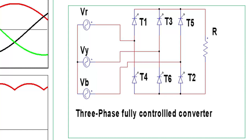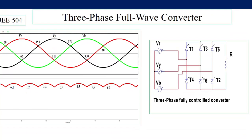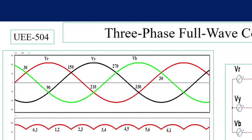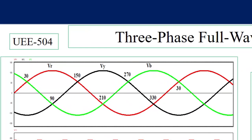At any time, two thyristors conduct to give a positive output voltage across the load. Vr, Vy, Vb are the three-phase voltages; Vy lags Vr by 120 degrees and Vb lags Vr by 240 degrees. From the waveform: from 30 to 150 degrees Vr is maximum; from 150 to 270 degrees Vy is maximum; and from 270 to 390 degrees (i.e., back to 30°) Vb is greater than Vr and Vy.